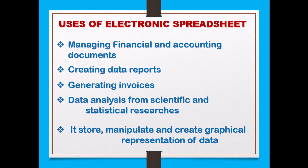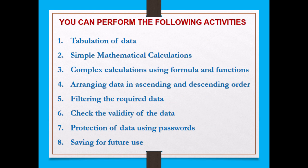For example, if you have a shop and want to see your sales during a month — say November — and compare two months' sales, you can do it using stored data to create a graphical representation and compare. You can also do tabulation of data, simple and complex calculations, arrange data in ascending or descending order, and filter required data. For instance, if all six sections A to F are typed in one file and you want only section B, you can filter and print that section alone.